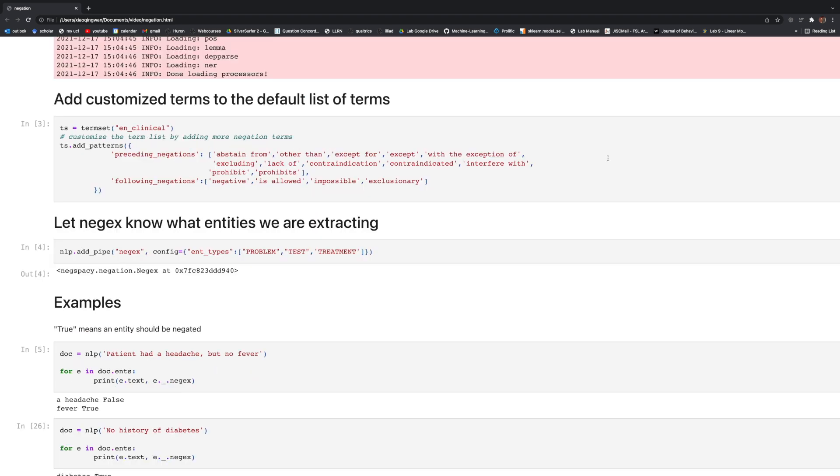Before we proceed, I'm going to add customized terms to the default list of terms. And notice that in the default term set for NegX, they're missing negation terms such as abstain from, other than, except for. Here I'm supplementing the default dictionary with my own terms.